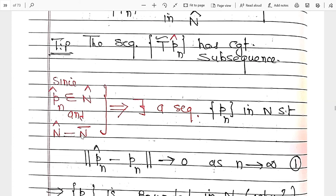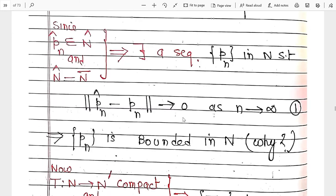Now this approaches to zero. Why does this approach zero? Because this approaches to zero — that is given, it is here from equation (1). Since ||p_n^hat - p_n|| approaches zero, its subsequence also approaches zero as n_k approaches infinity. So by equation (1), this approaches to zero. Clear.